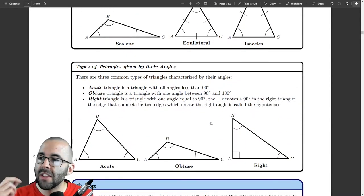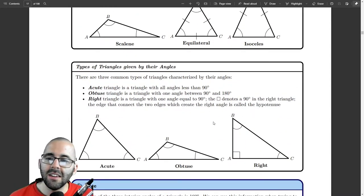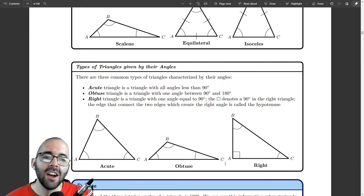But we can also classify them by their angles. An acute triangle is all of the angles are acute. All of them. A right triangle means that there's one right angle, which means the other two have to be acute. And an obtuse triangle says that there's one obtuse angle. So, one right angle is right. One obtuse angle is obtuse. Otherwise, it's acute.